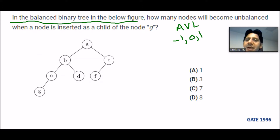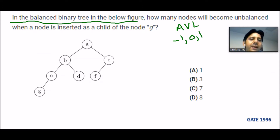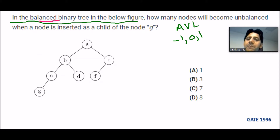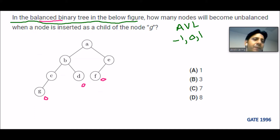Since they are saying the balanced binary tree is given in the figure, we first need to find whether this tree is balanced or not. We are going to find the balancing factor of this tree. All the leaf nodes should have a balancing factor of zero, so we assign them zero and then work from bottom to up.